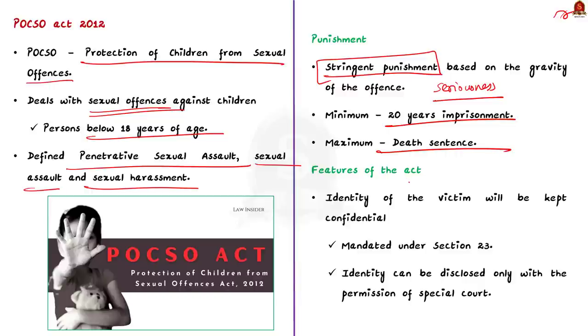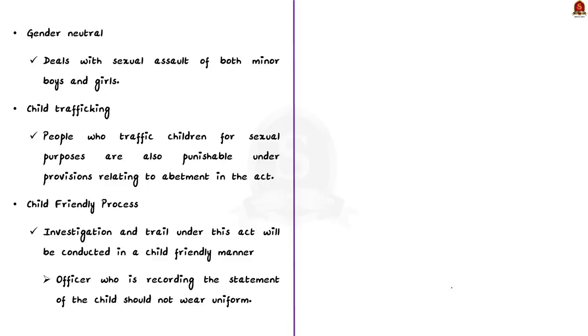Firstly, it ensures that the identity of the victim is kept confidential. This means that the name and personal details of the child victim cannot be disclosed to the public. Only with the permission of a special court, the identity can be revealed. Another important point is that the act is gender neutral. It means that it applies to both boys and girls who are victims of sexual assault. The POCSO Act also addresses the issue of child trafficking for sexual purposes. People involved in trafficking children for such activities can be punished under the act, specifically under the provisions relating to abatement.